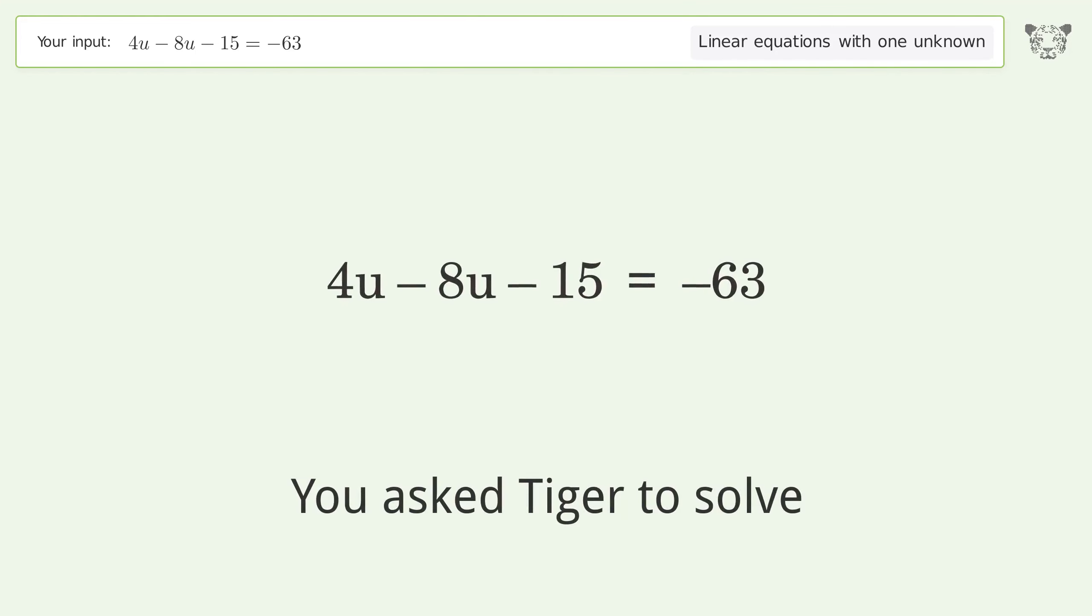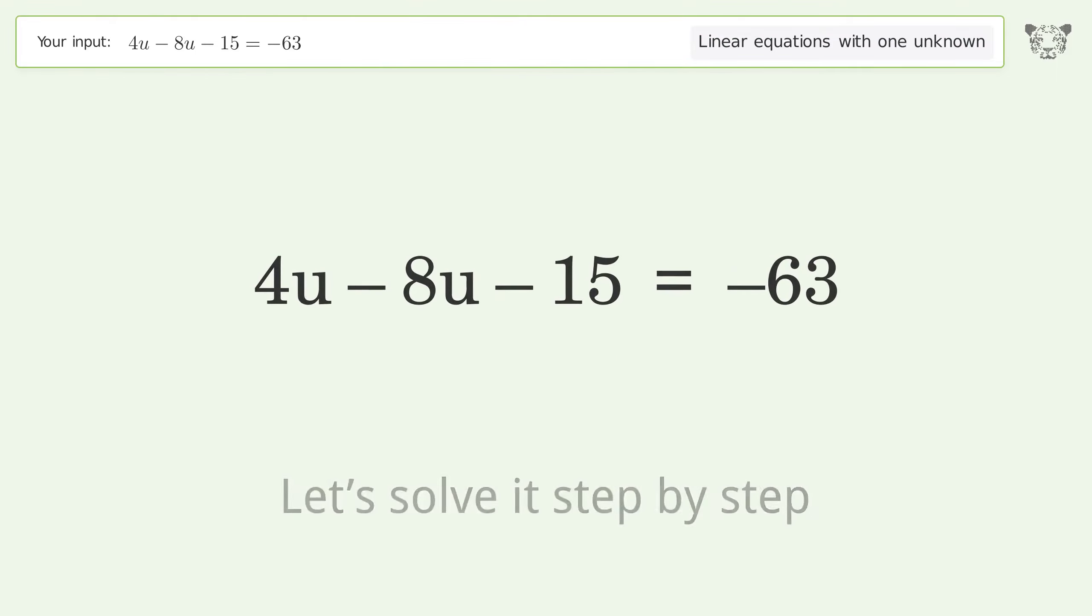You asked Tiger to solve this linear equation with one unknown. The final result is u = 12. Let's solve it step by step and simplify the expression.